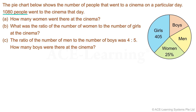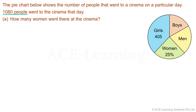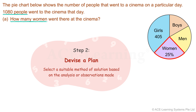There are three parts to this question. Let us take a look at the first part first. It asks for the number of women that were at the cinema. From the pie chart, it is 25% of the total number of people. Now that we have made our observations, let's proceed to Step 2: Devise a plan.